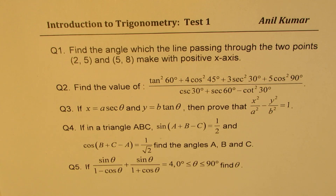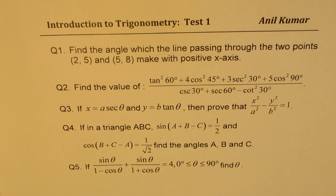Question number two: find the value of tan squared 60 plus 4 cos squared 45 plus 3 secant squared 30 plus 5 cos squared 90 degrees, divided by cosecant 30 times secant 60 minus cot squared 30. You need to use special triangles and exact values to get the solution.